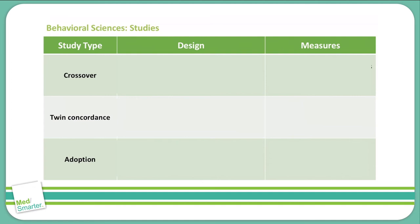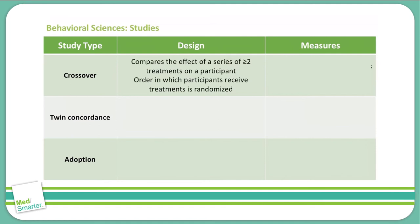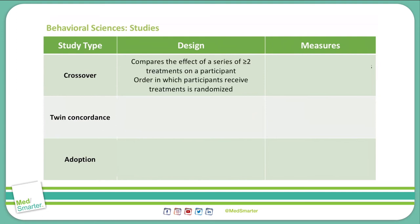The three final types of studies are crossover studies, twin concordance studies, and adoption studies. In a crossover study, this compares the effect of two or more treatments on a participant. Patients receive one treatment and then change to a different treatment to see which helps them better. There is a washout period in the middle where they clear the medication and allow the body to process it out before starting another. To help with bias, we randomize the order in which they receive treatments, so one patient might receive treatment A while another receives treatment B, then they swap halfway through.